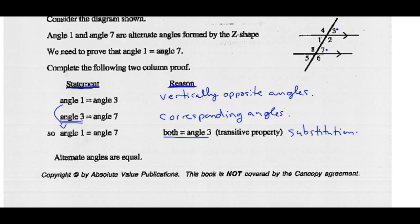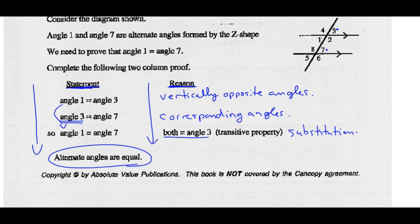Therefore, alternate angles are equal. In the two-column proof, the left column is your statement, the right column is the reason why it's true, and at the end you should prove what you were asked to prove.